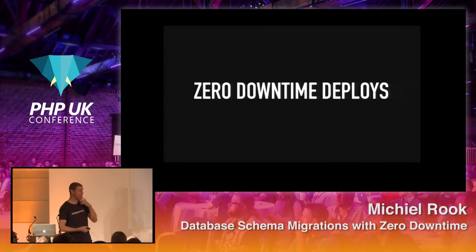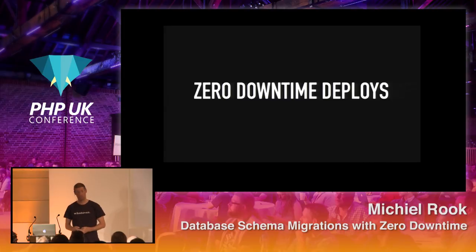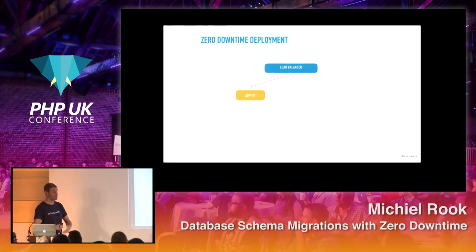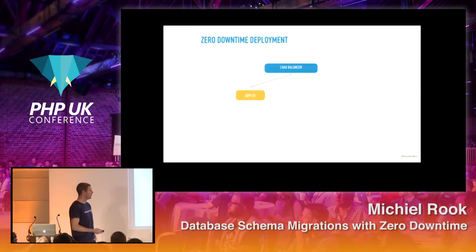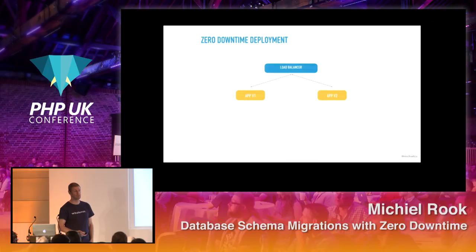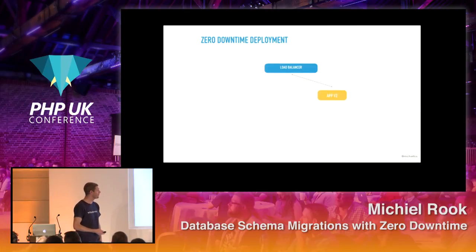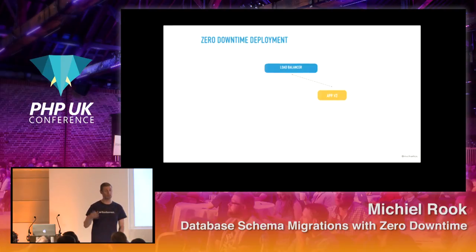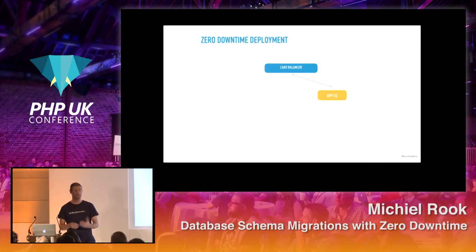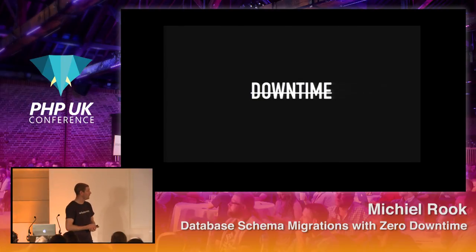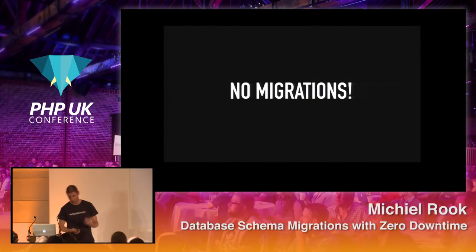Let's look at zero downtime deployments for highly available applications. Imagine a load balancer between the application and the internet. We have app version 1 behind the load balancer. We start app version 2, and once it boots, we add it to the load balancer so it starts receiving traffic. Then we take app v1 out of the load balancer and stop it. If you do this right, your end users will never know that v1 was replaced with v2 — no downtime. This is easy when we have no migrations.